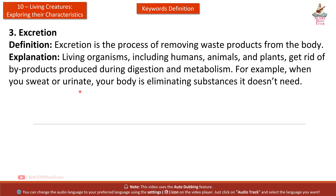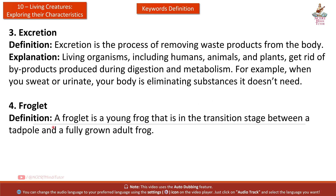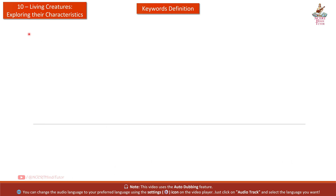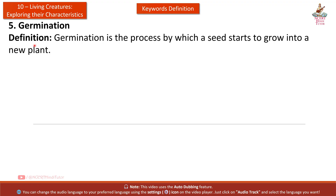For example, when you sweat or urinate, your body is eliminating substances it doesn't need. Fourth: Froglet. Definition: A froglet is a young frog that is in the transition stage between a tadpole and a fully grown adult frog. Explanation: At this stage, the tadpole begins to develop legs and its tail starts reducing. The froglet looks like a miniature version of an adult frog but is still developing its final features.